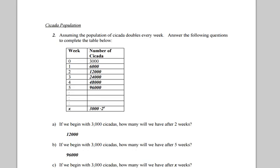Your table is 6,000, 12,000, and 24,000. That's what I need to observe when I was walking around. Obviously, so the answer to A, after two weeks you're going to have 12,000 cicadas. After five weeks you're going to end up with 96,000 cicadas.